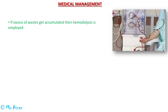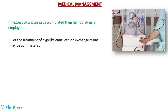If excess waste materials accumulate in the body, the patient can be provided with hemodialysis, in which the patient's blood is pumped to a dialyzer — also called an artificial kidney — which filters out waste materials from the blood and returns the purified blood to the patient. For the treatment of hyperkalemia, cation exchange resins can be used, which enhance the excretion of potassium from the body.